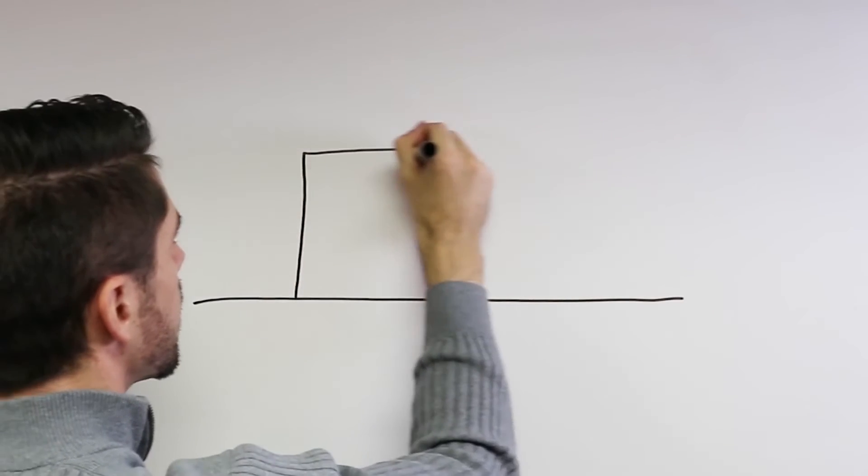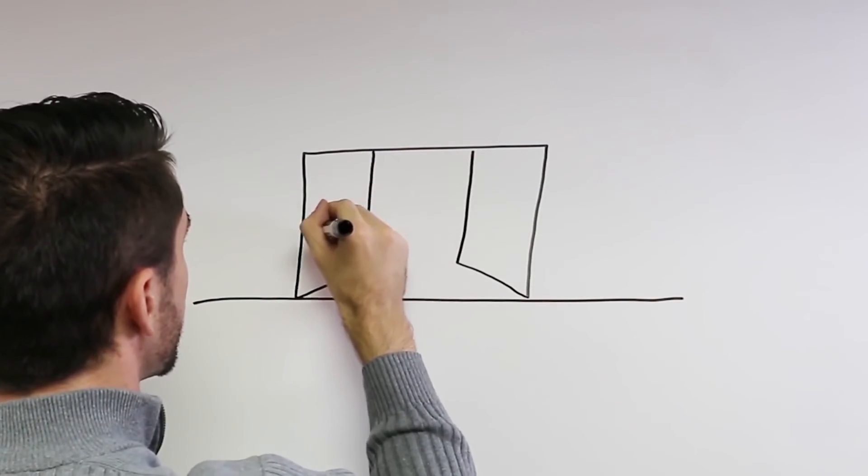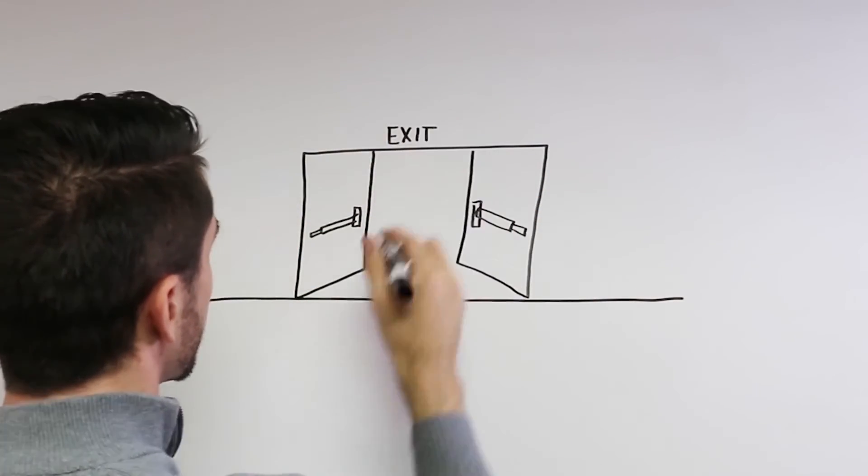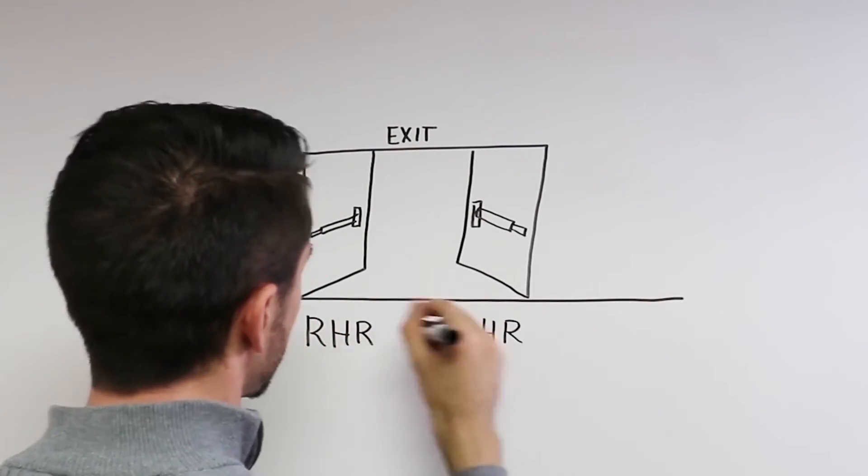Doors with exit devices are always out swinging, so these doors and the exit devices installed on them are always handed LHR or RHR.